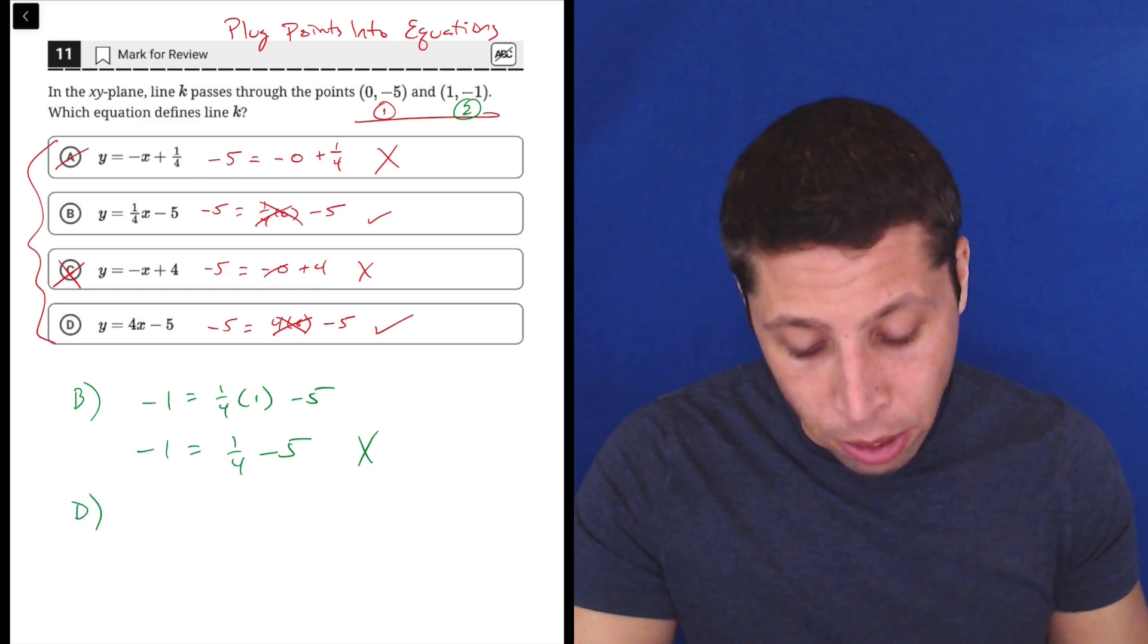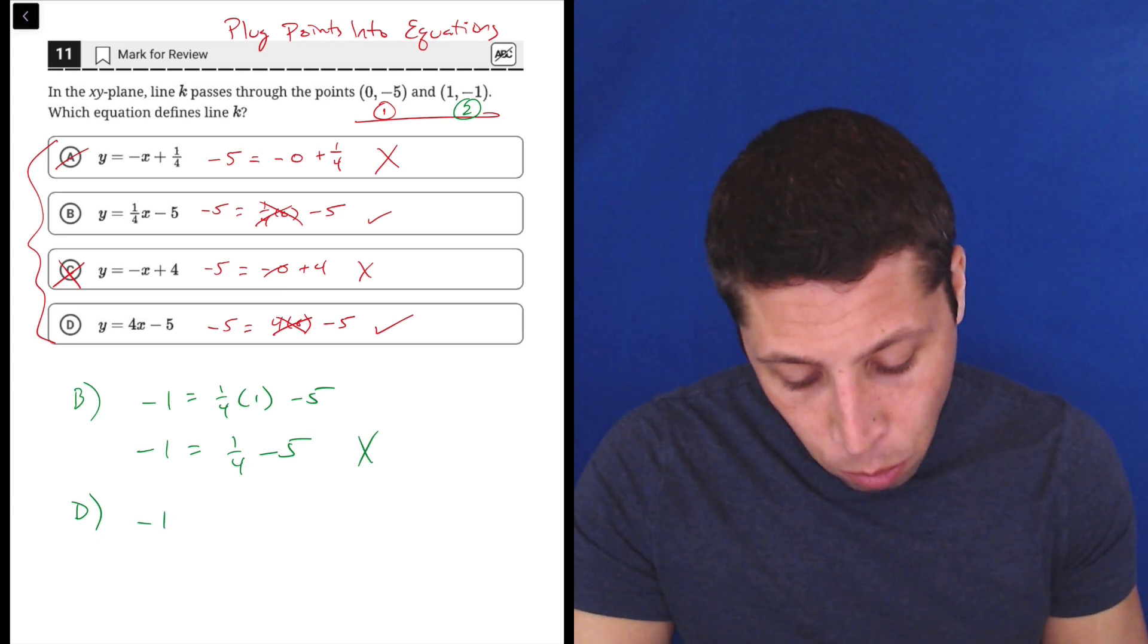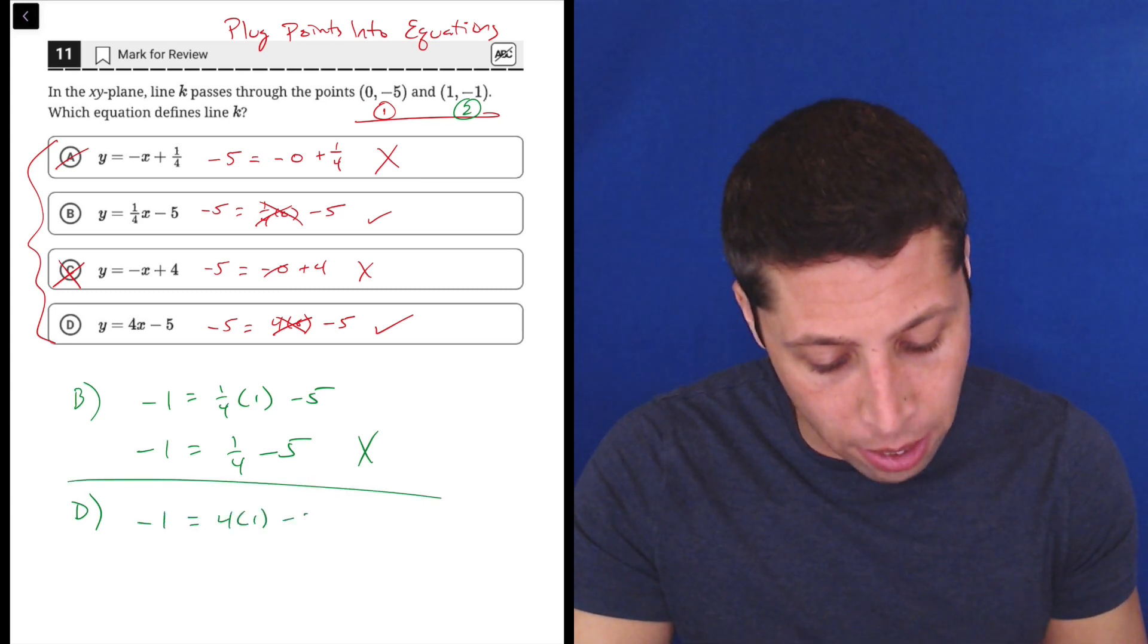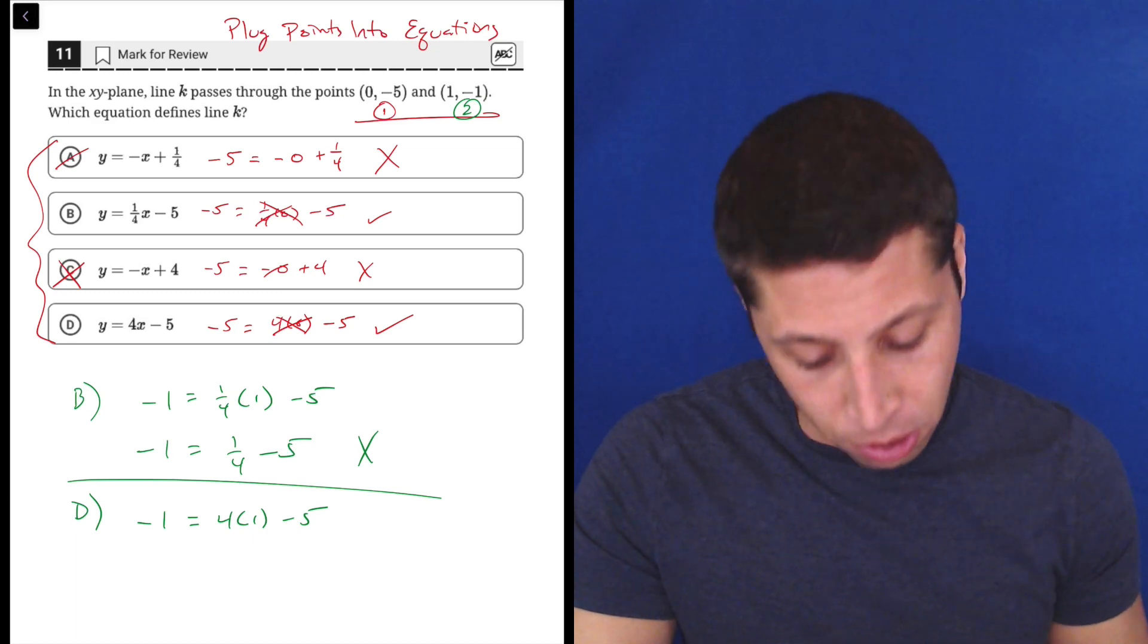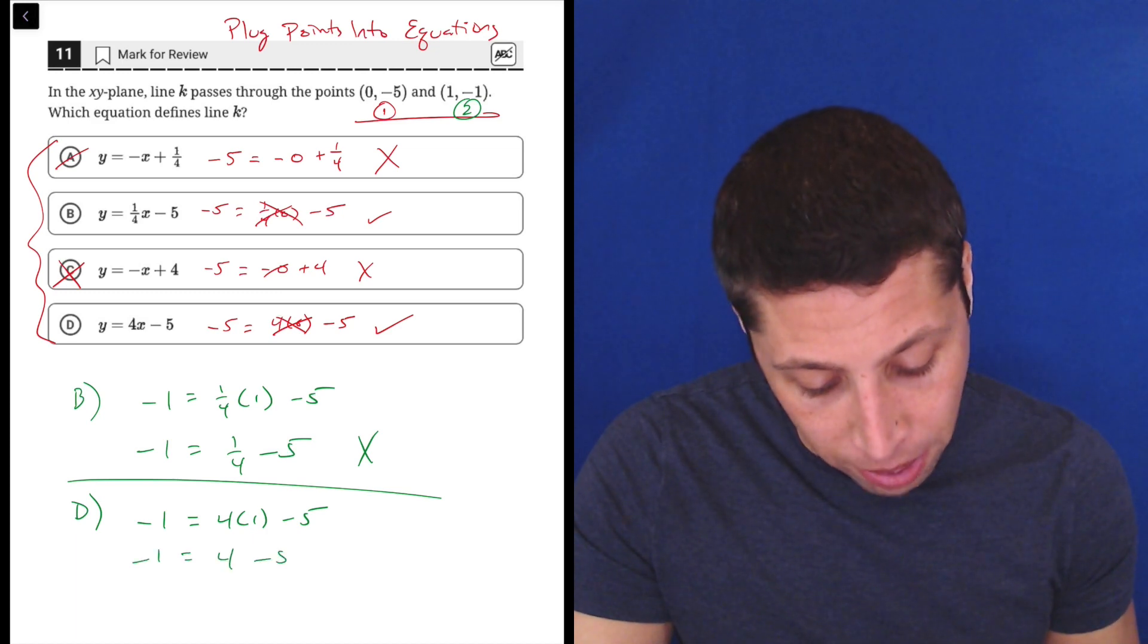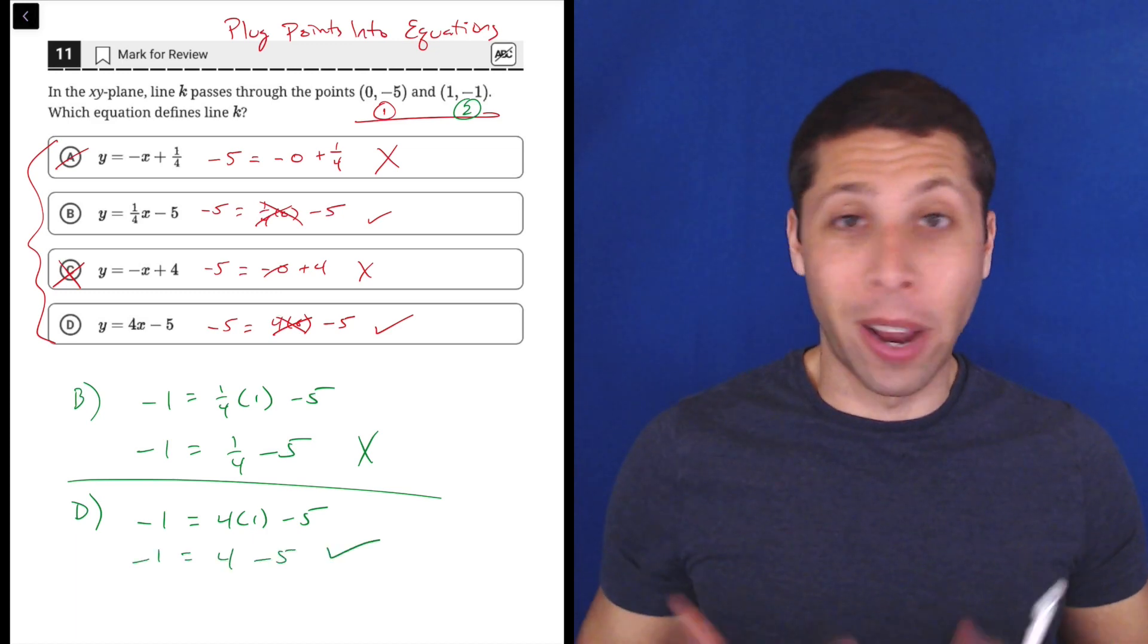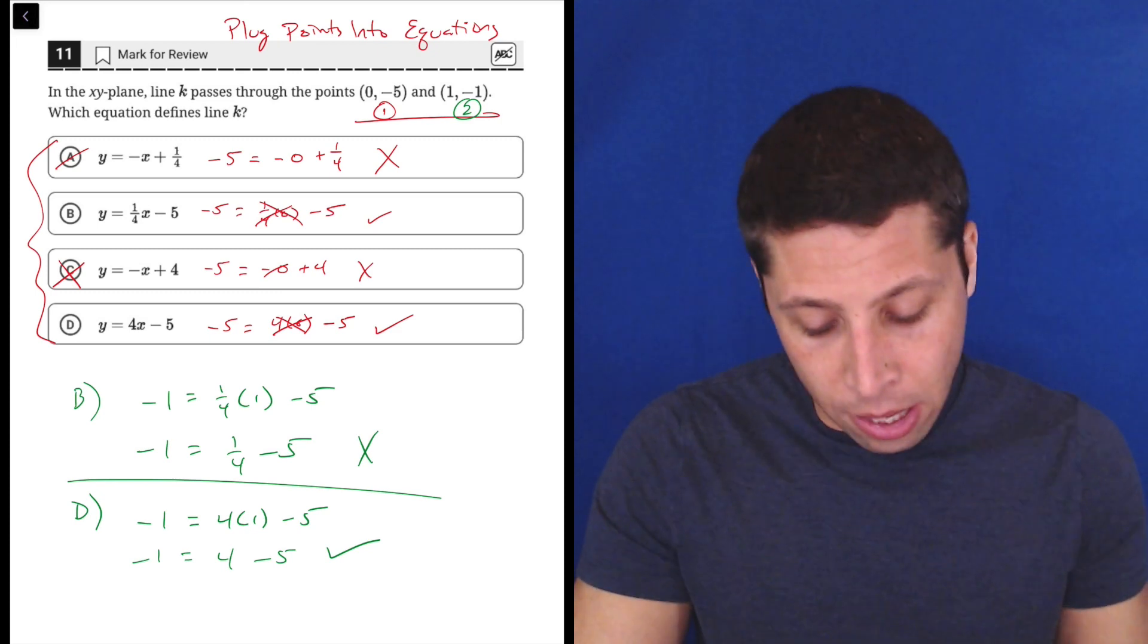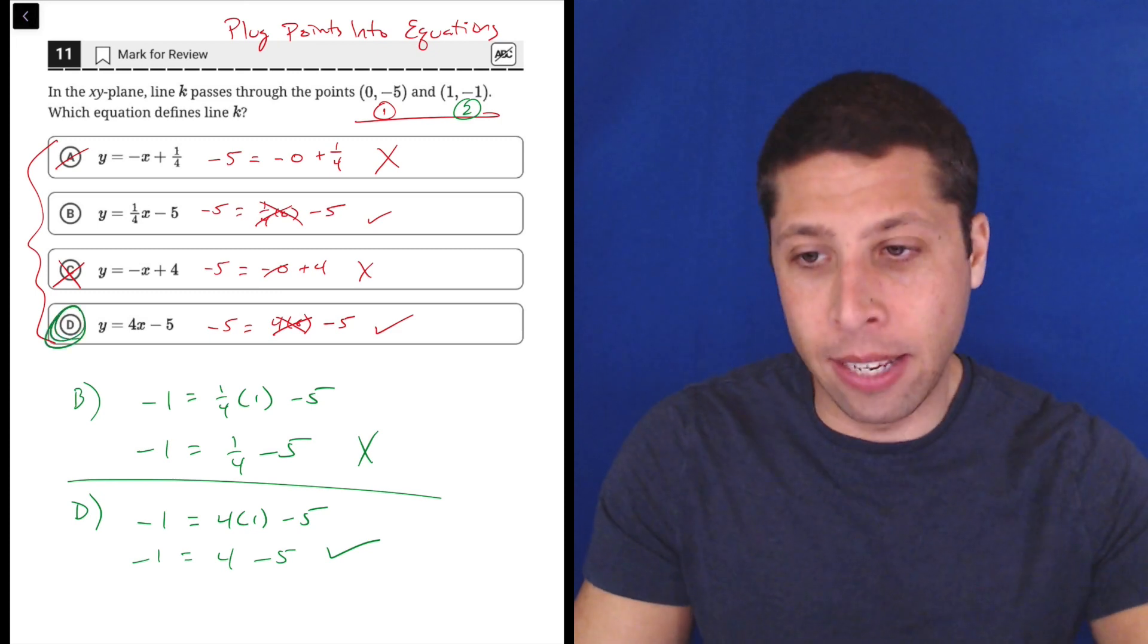So let's try D though, let's be really sure. -1 = 4(1) - 5. So -1 = 4 - 5. That is true, right? 4 - 5, -1. So proof now that D is the answer.